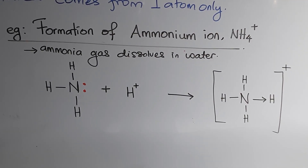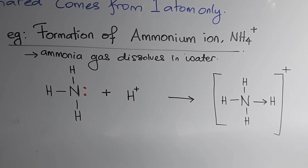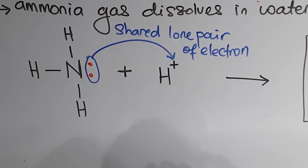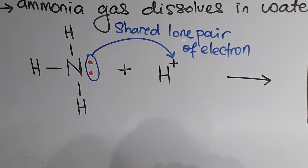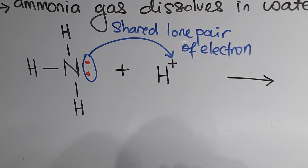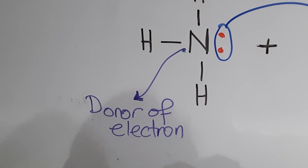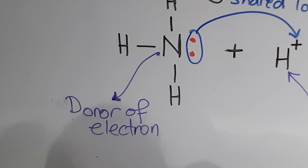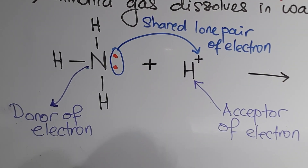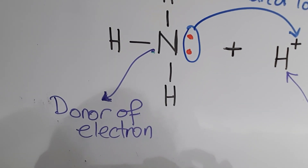During the formation of ammonium ion, when ammonia gas dissolves in water, the ammonia molecule reacts with hydrogen ions. The hydrogen ion lacks a lone pair of electrons. When the ammonia molecule comes into contact with the hydrogen ion, the nitrogen atom from the ammonia molecule shares its lone pair of electrons — both valence electrons — with the hydrogen ion. Hence, the nitrogen atom is known as the donor of electrons.